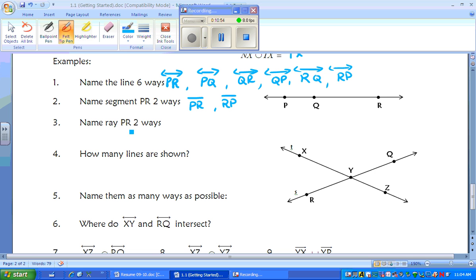Naming a ray on the other hand is different. Name ray PR two ways. Well, you can name it as ray PR with an arrow over the top. Or because Q is also on that line, you can name it as PQ because it still extends all the way through R.